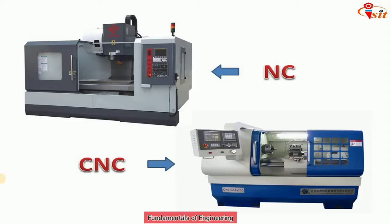To overcome the problems occurring in NC machines, CNC machines were introduced in the 70s. Due to the involvement of a computer, they are capable of performing a large number of functions. Commands to the machines are given through floppy disks or hard disks with the help of appropriate computer programming. Computers have the distinct advantage of memory storage, so a simple change in the stored program can immediately start producing a different type of component.